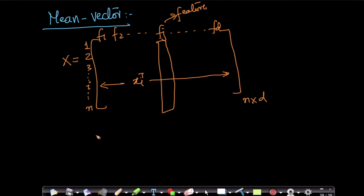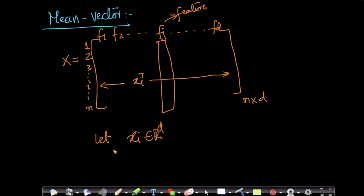Each of your xᵢs belongs to ℝᵈ. Now, what if I compute a mean vector as follows?